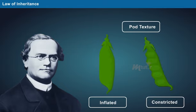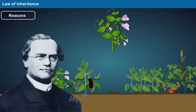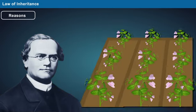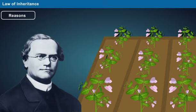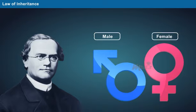The reasons why Mendel chose pea plants for his experimentations include: pea plants can easily be grown in large numbers, it has both male and female reproductive organs.